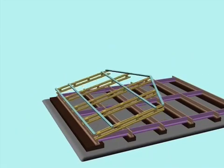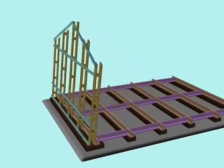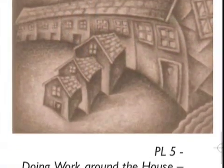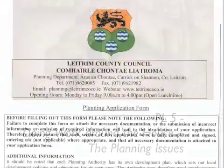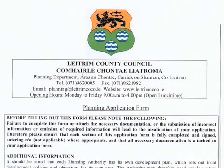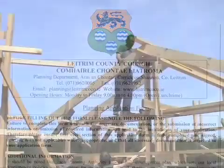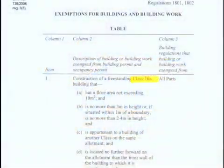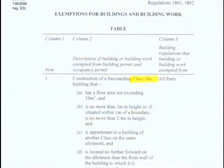Almost all modern building activity is subject to legislative control administered by local authorities. This means that normally one has to obtain some form of permission in order to build something. However, there also exists a category of building activity which is largely free from legislative control, called exempted development.